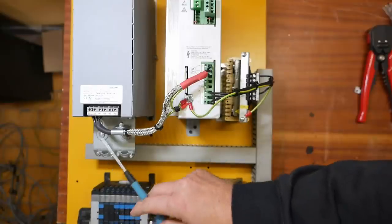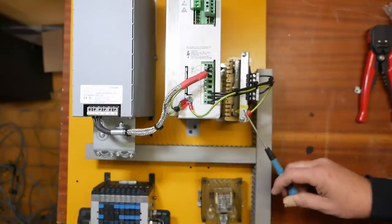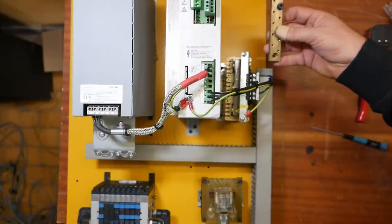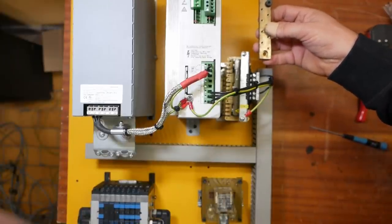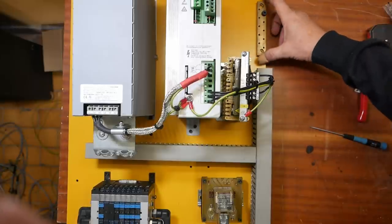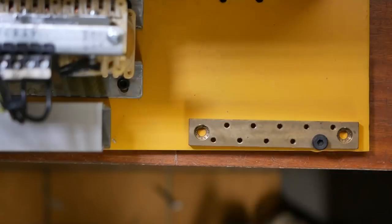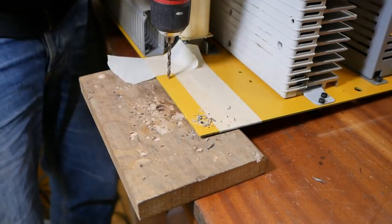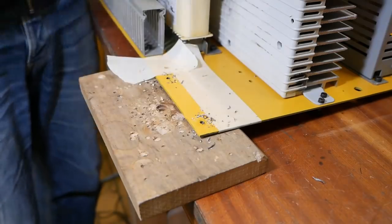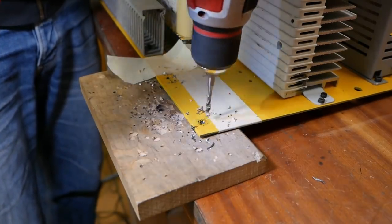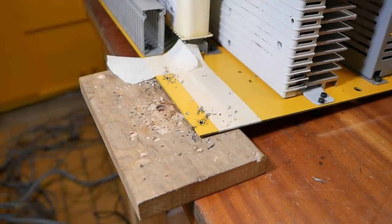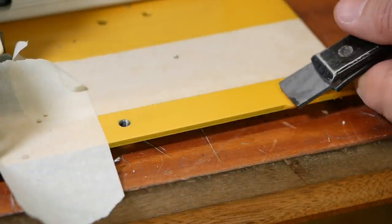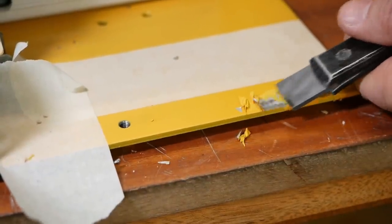I've tied the earths of the sine filter, the VFD and the line reactor together but it's about time I did a common earth. Schaublin had this really nice bronze or brass bus bar so I think I'll just remount that and reuse it. I'm going to need a decent electrical bond so I'll just get this paint back off.